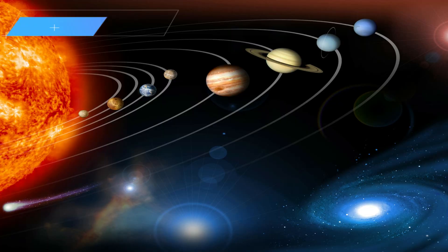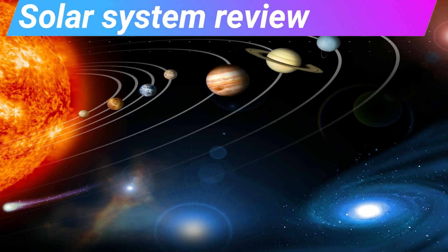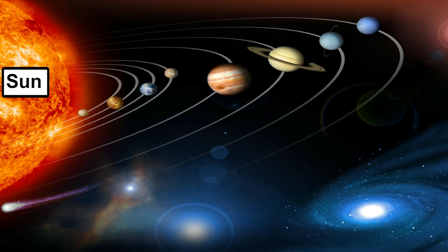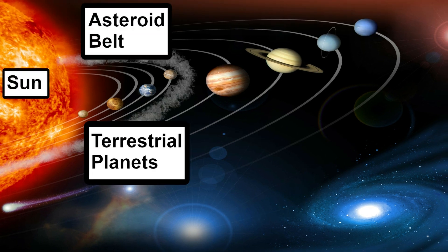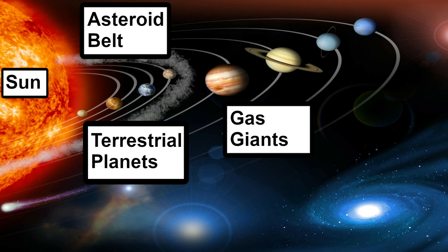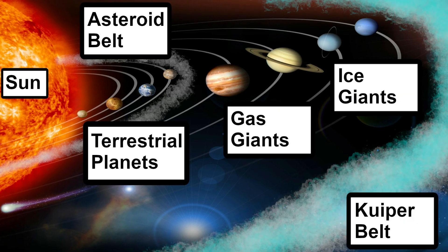Now we know how the solar system formed and that its main components today are the Sun, terrestrial planets like Earth, the asteroid belt, gas giants like Jupiter, ice giants like Neptune, and the icy Kuiper belt objects.